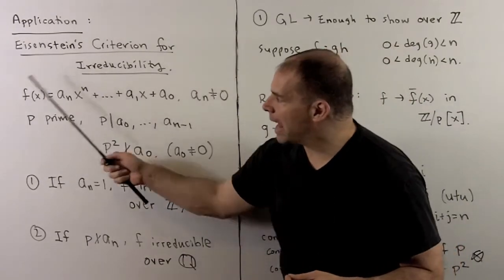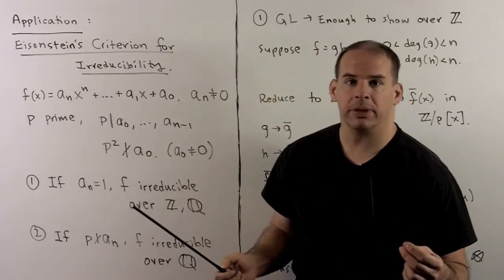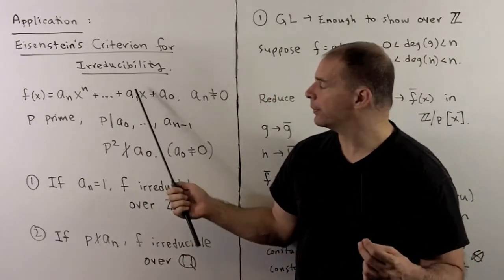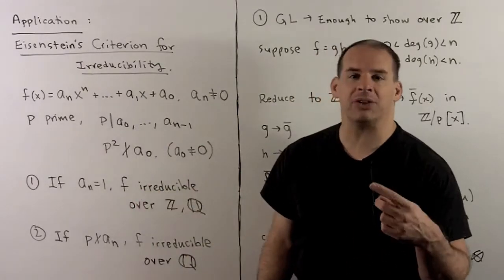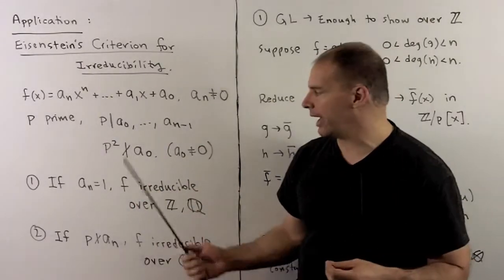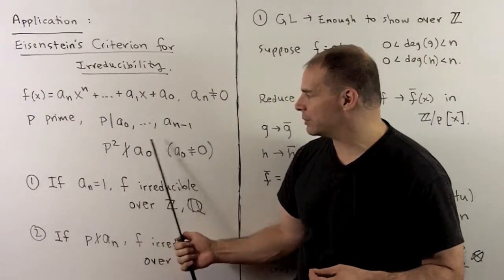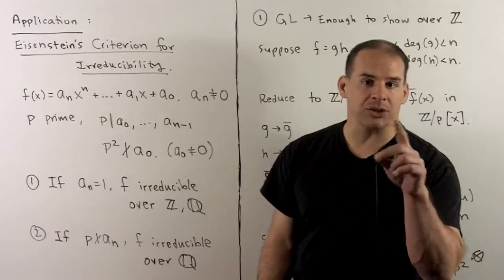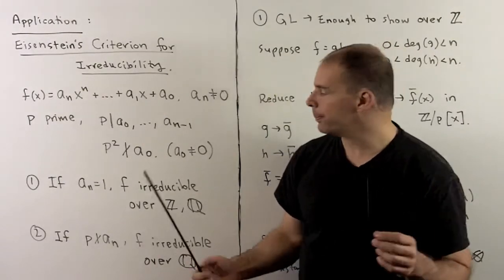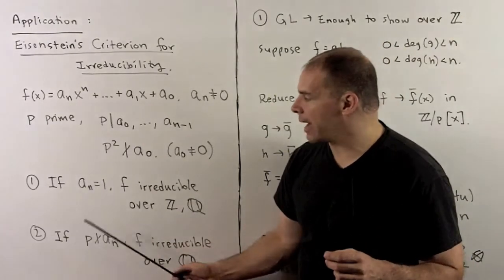Here, f is a polynomial over the integers, we'll assume of degree n. p is a prime, p divides all the coefficients except for a_n. We also assume that p² does not divide a₀, and that means also that a₀ is not exactly 0.